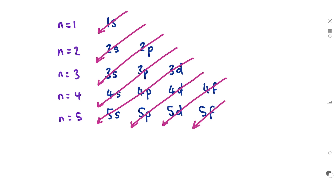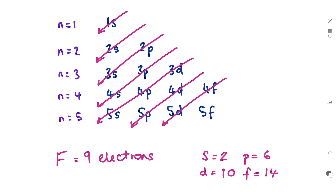Let's use the element fluorine as an example. Using the periodic table, fluorine has an atomic number of 9, which means it contains 9 electrons. The S sub-level can contain a maximum of 2 electrons, P a maximum of 6, D a maximum of 10, and F is 14. Using the diagram, the first thing to write is 1s². Following the arrows, the next arrow points at 2s, so 2s². That's 4 electrons total — take them away from 9, meaning 5 electrons still need to be placed into the 2p sub-level: so 2p⁵.